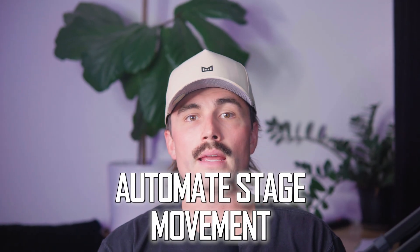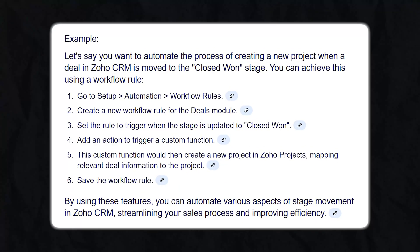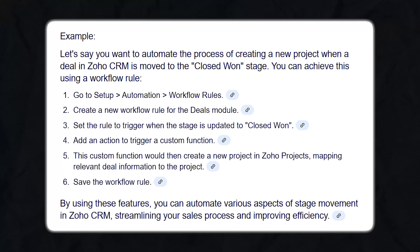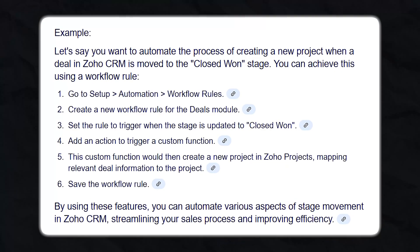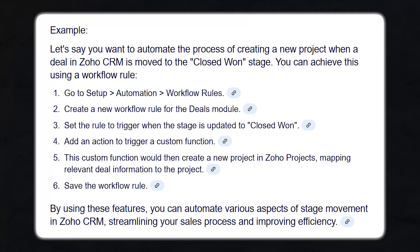Step five: automate stage movement. This is optional but powerful. If you want to take this further, you can set up a workflow rule to move deals or leads automatically based on triggers. Go to setup, then automation, then workflow rules. For example, when a lead status is updated to qualified, you could trigger an email to the sales team or even auto-convert the lead to a deal. Automations keep the process flowing, especially when your team gets busy.